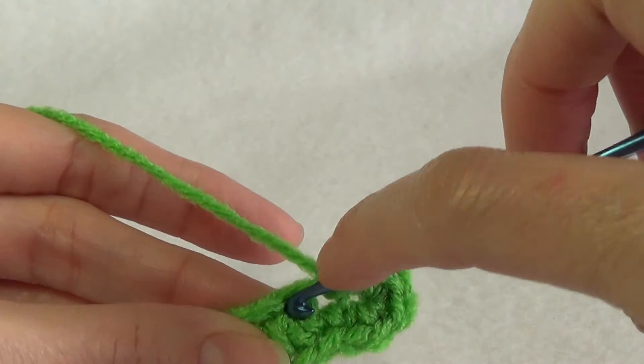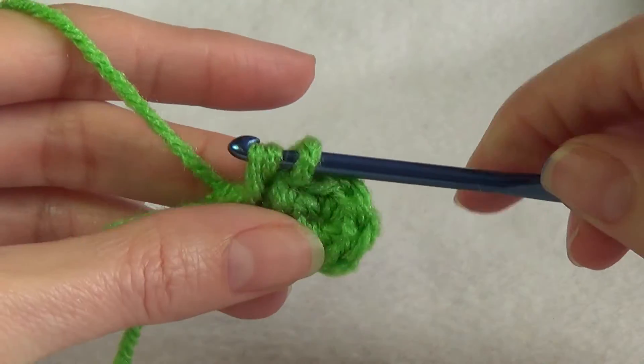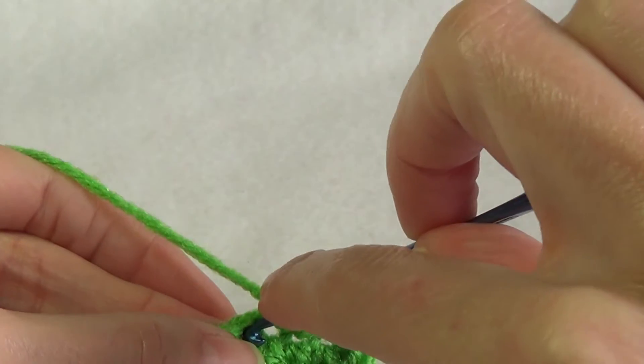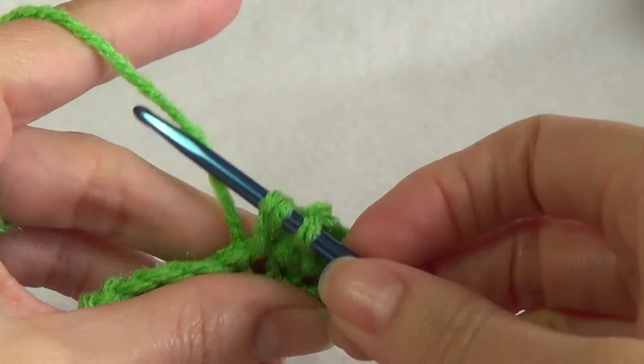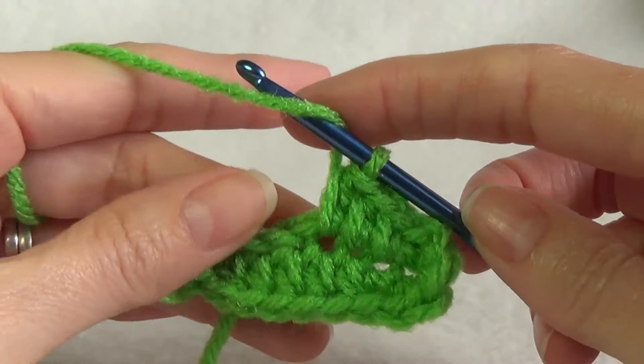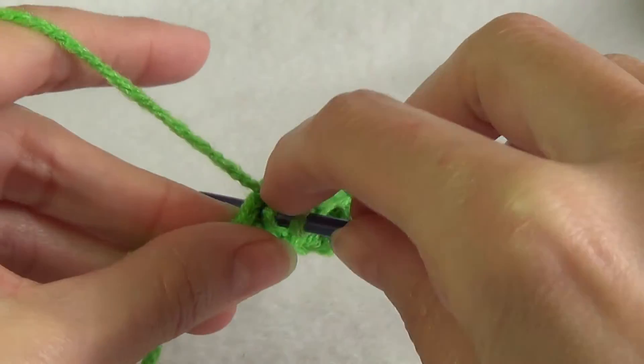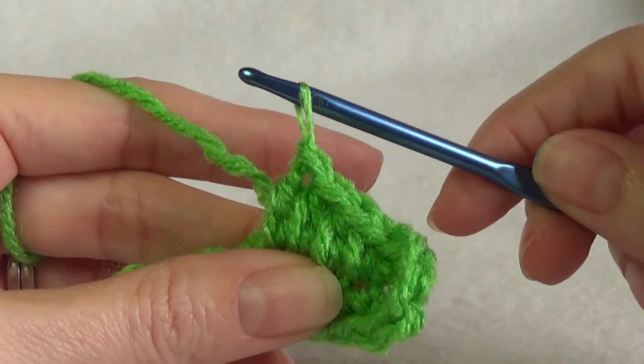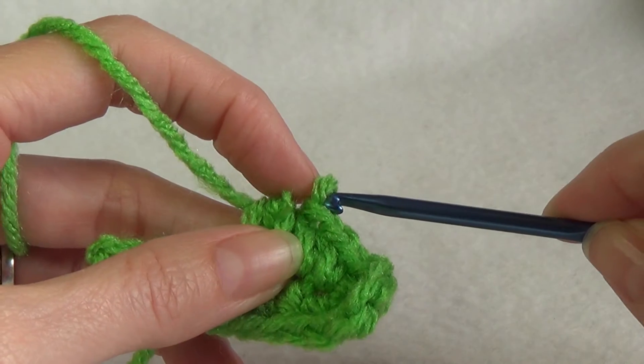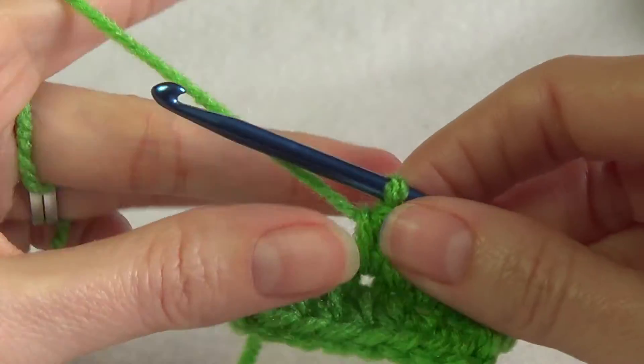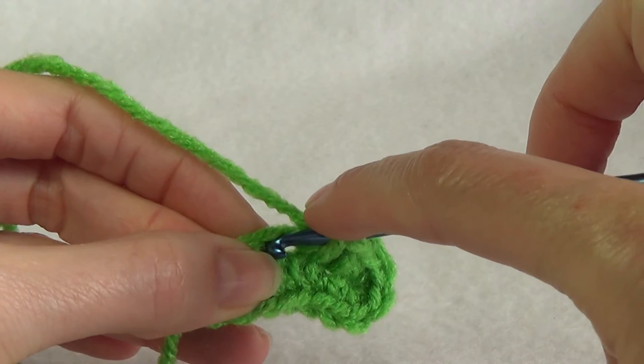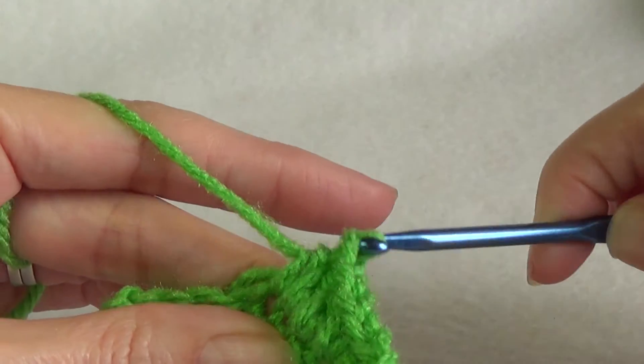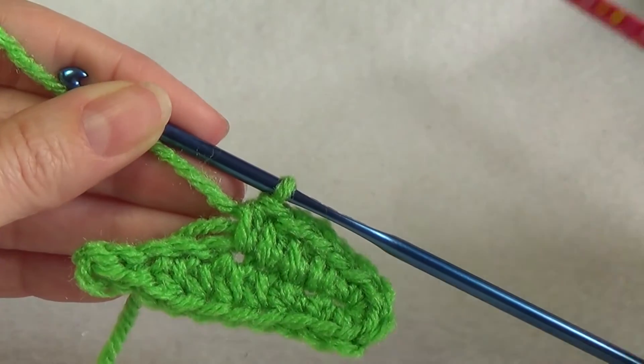We're going to work half double crochet, wrapping our yarn first. Half double crochet, another half double crochet, and another half double crochet.